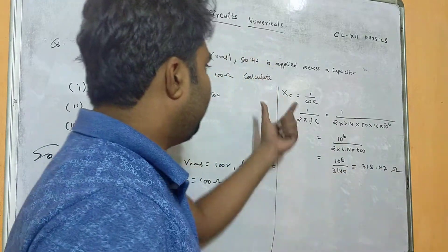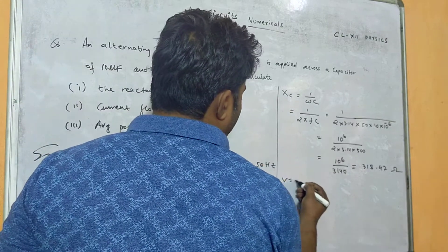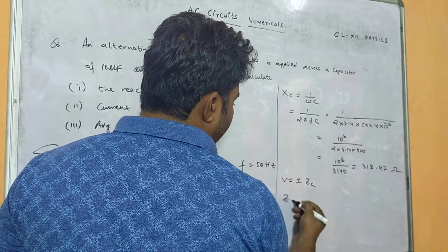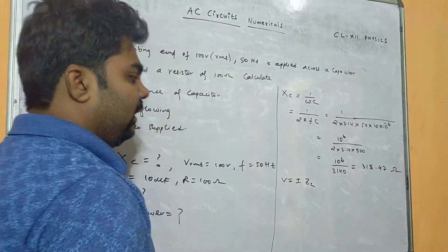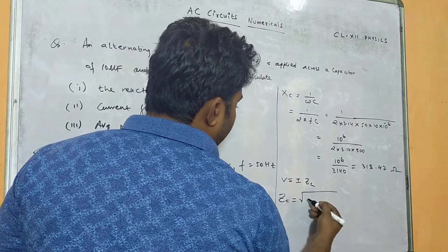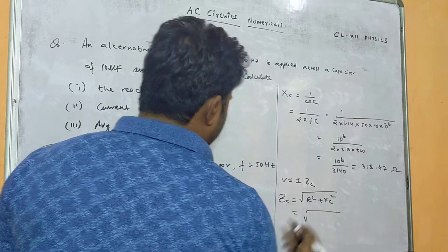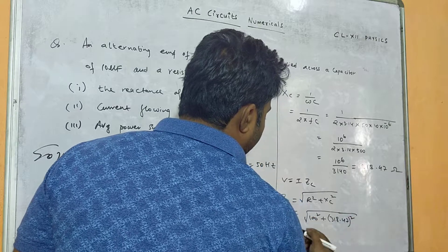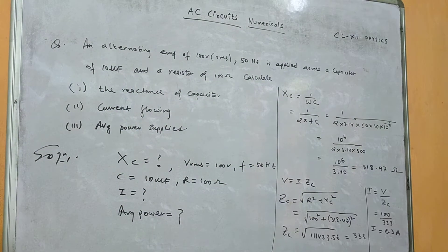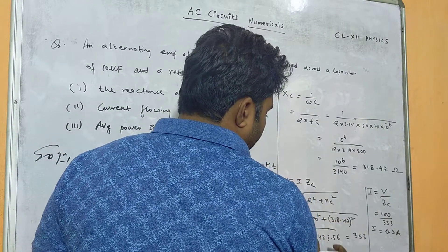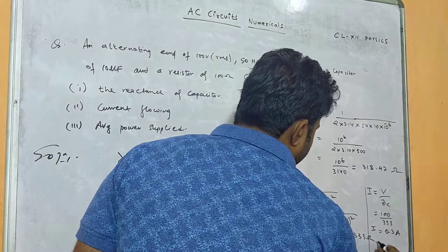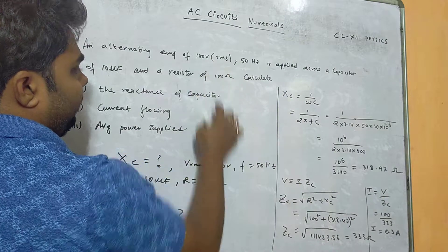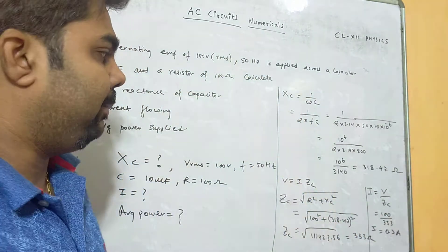After getting Xc, we find the current. First we find the capacitive impedance Zc, which equals root of R-squared plus Xc-squared. Substituting R equals 100 and Xc equals 318.47, after solving we get Zc equals 333 ohm. Current I equals voltage divided by impedance, so I equals 100 divided by 333, giving I equals 0.3 ampere.